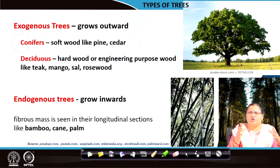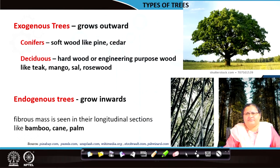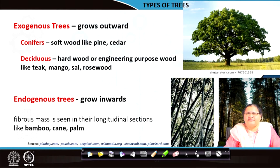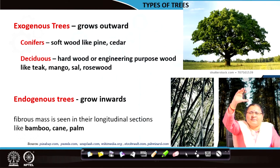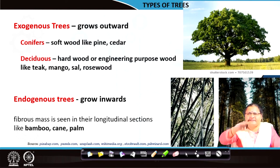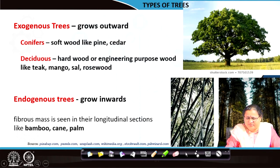Exogenous trees grow year after year showing different shades within — those are called the annual rings, which are not as clearly seen in coniferous trees. Endogenous trees have annual rings in the vertical direction; you can see that at a particular time interval they have segments grown together. The bamboo tree is shown in the picture here and you can see the segments growing at a certain period of time.